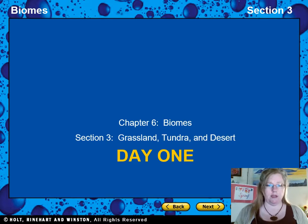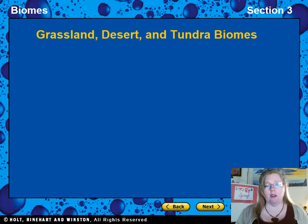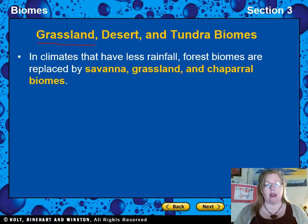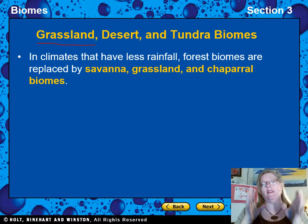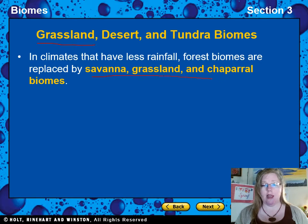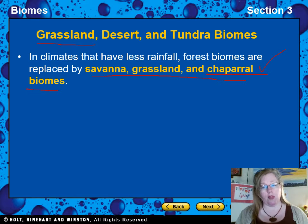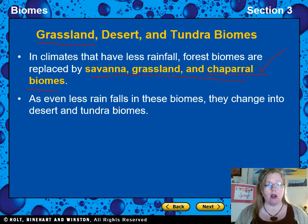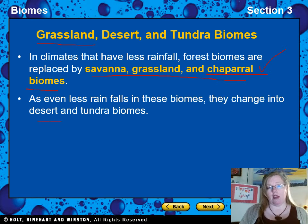We're going to start with the grasslands. These are found in climates that have less rainfall. Section 2 covered forests, and it takes a lot of water to grow trees. If you don't have enough rainfall, instead of forests you're going to get savannahs, grasslands, and chaparral — pronounced 'chaparral,' where the CH sounds like SH. As even less rain falls, biomes change to desert and tundra.